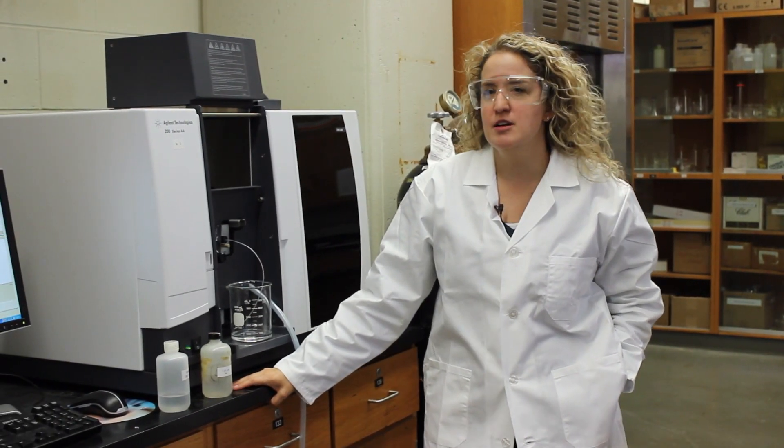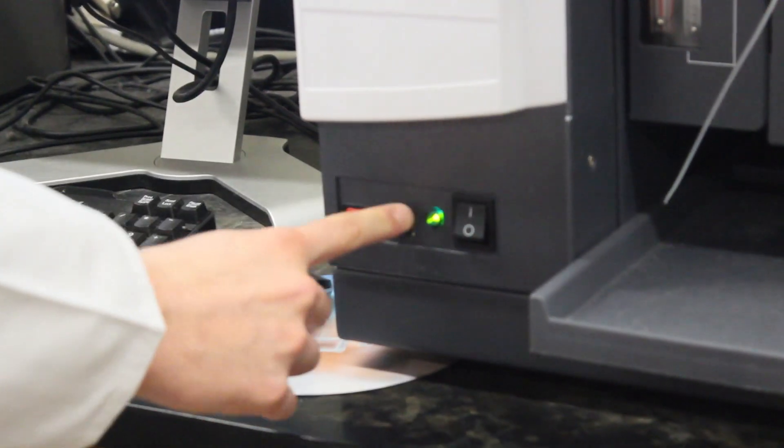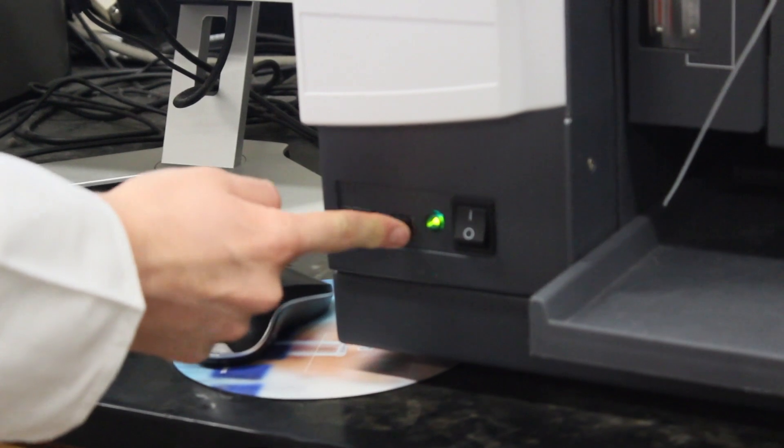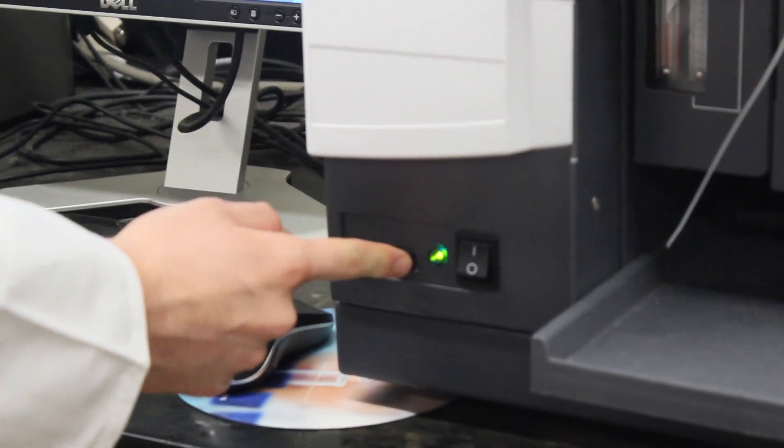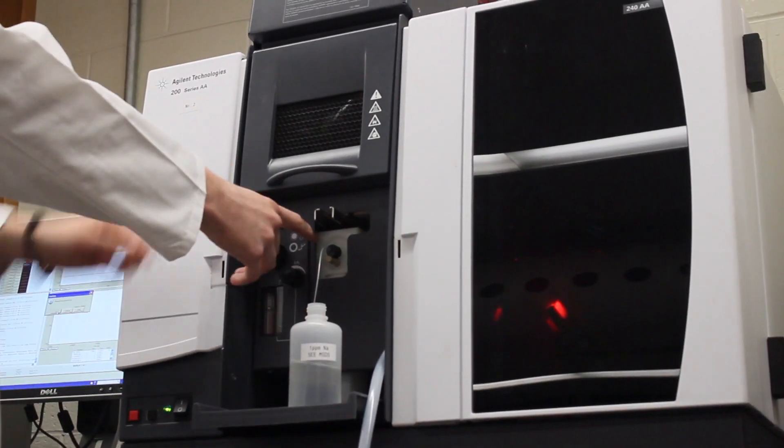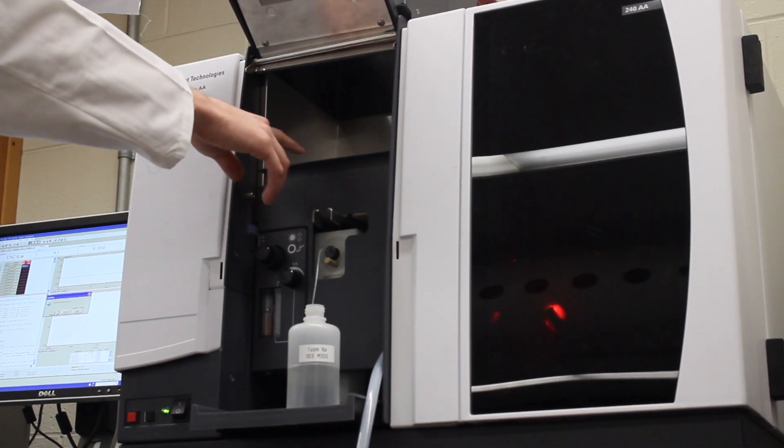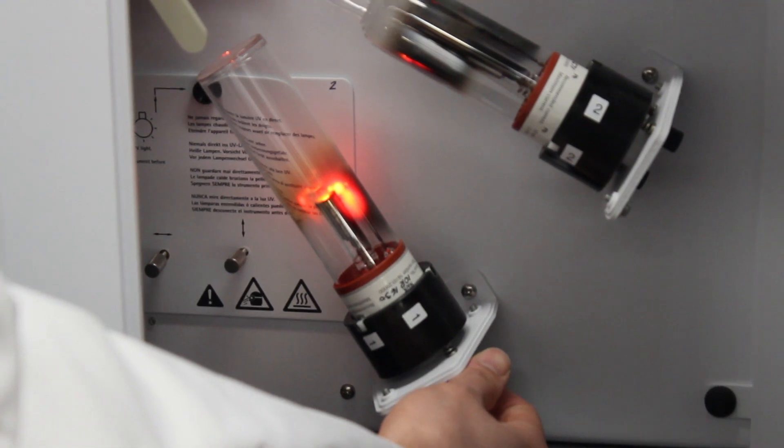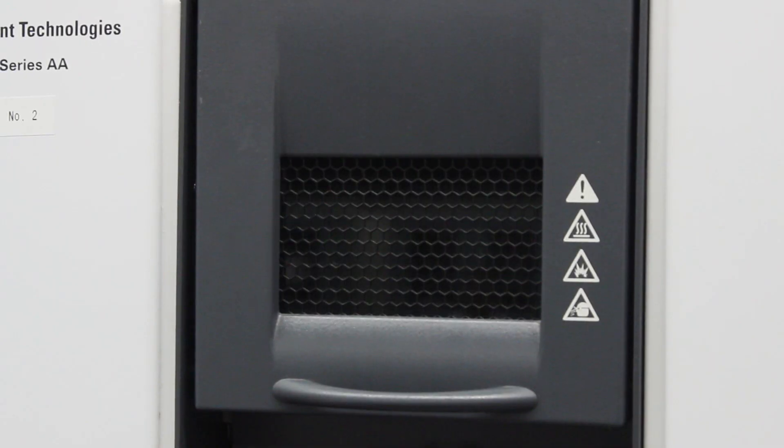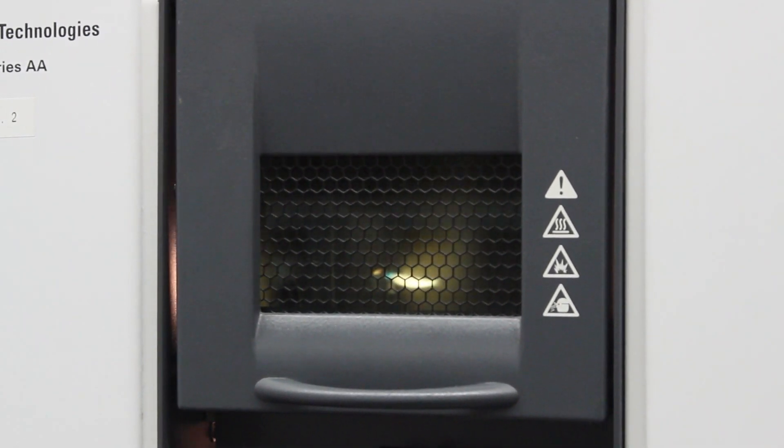This is an atomic absorption and emission spectrometer. It can analyze solutions of metals. Metals absorb and emit light, so this can test both. It looks at the concentration of metals in solution—the light that's absorbed or emitted is proportional to the concentration in that solution.